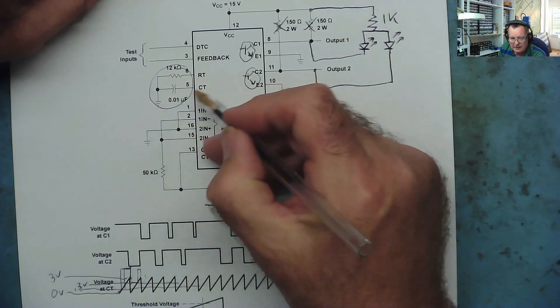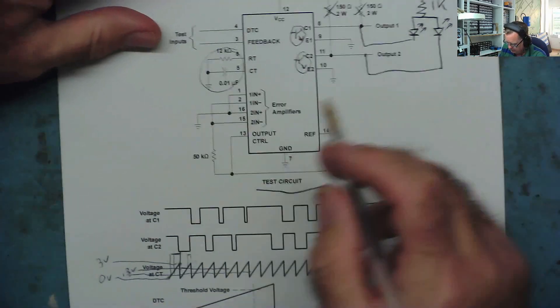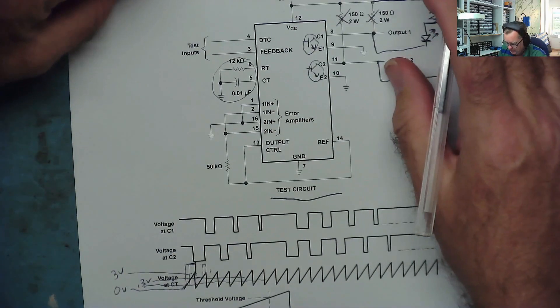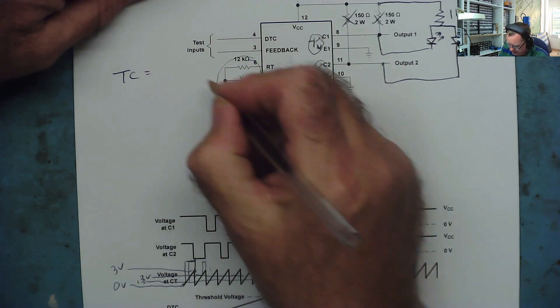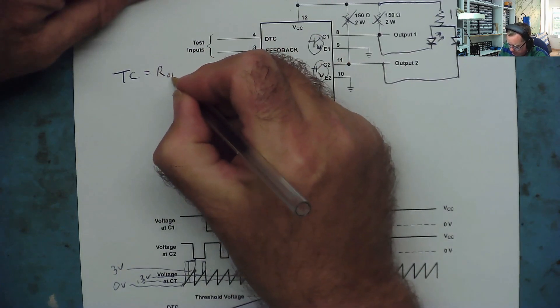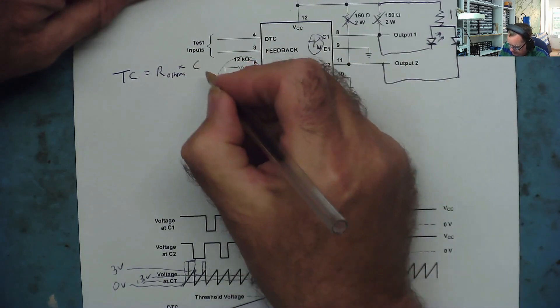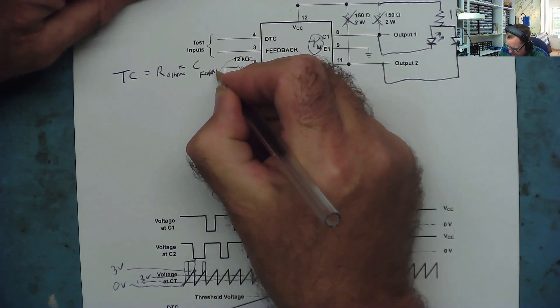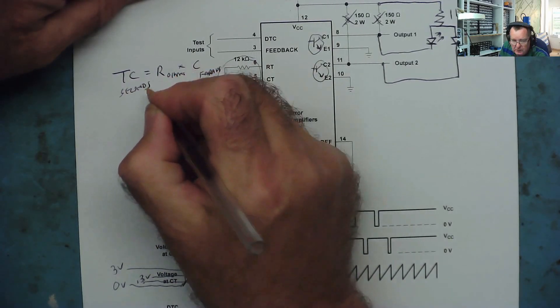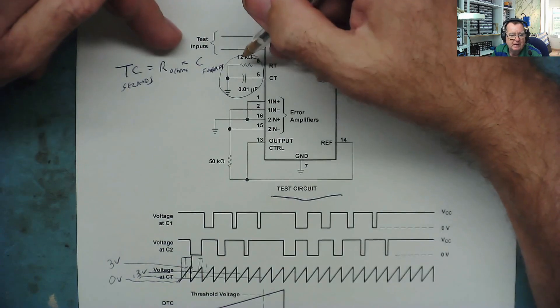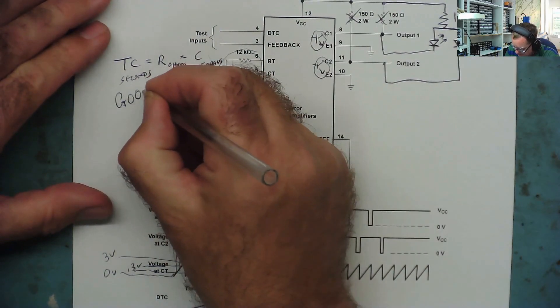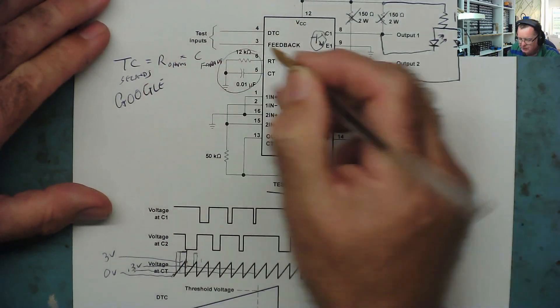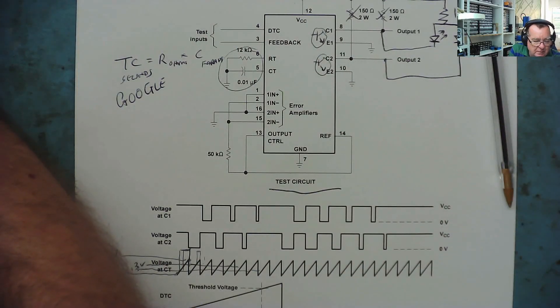So what value should we stick in here? Well, there's a formula for this, but we're not going to do the maths. The formula is called the time constant. Time constant basically says it equals the value of the resistor in ohms times the value of the capacitor in farads, and that's in seconds. That's the formula: seconds equals resistance times farads. Well, instead of doing all these zeros and maths, we can just use Google. So to work out the value of these two components, we're going to use Google. Let's go over to the screen.